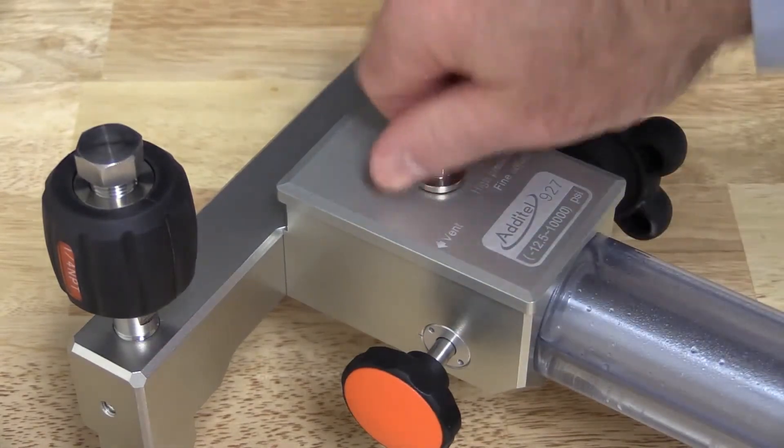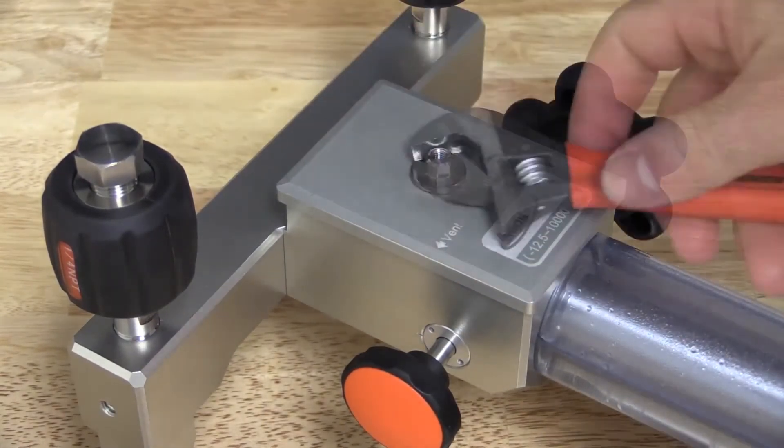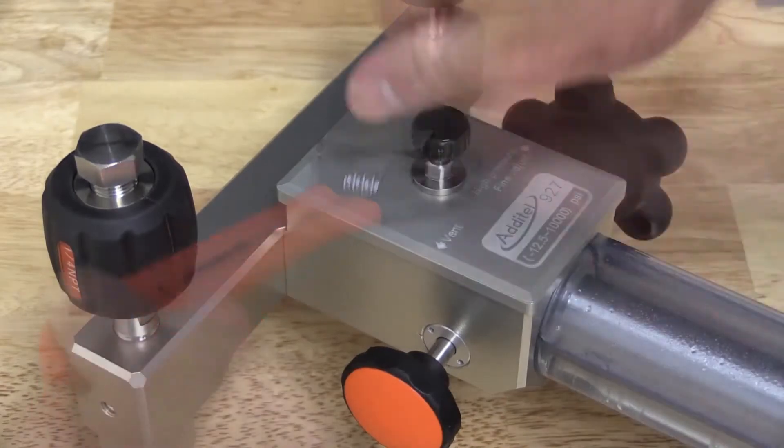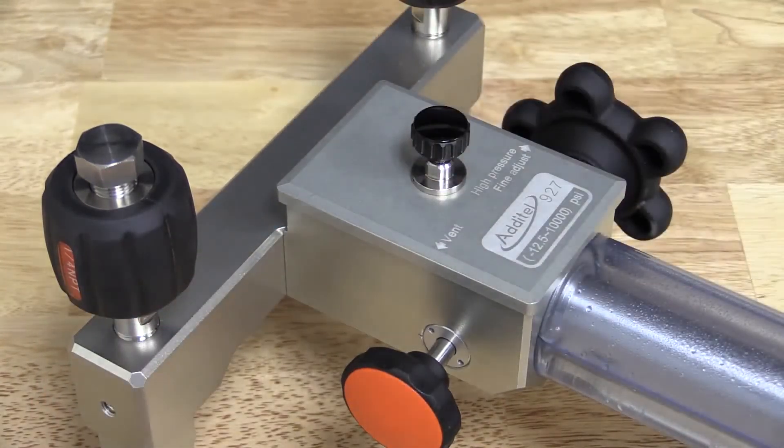Once we have the liquid reservoir two-thirds full, we can put the reservoir lid back on. We do this in reverse order of how we removed the lid.